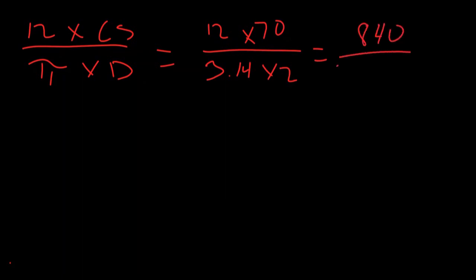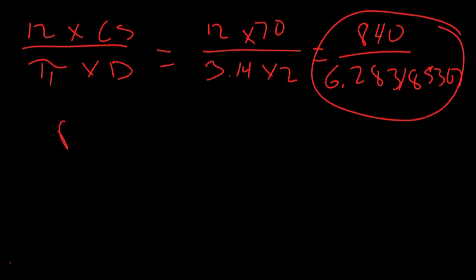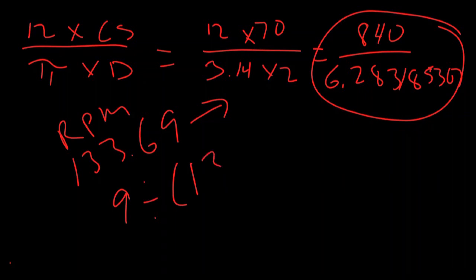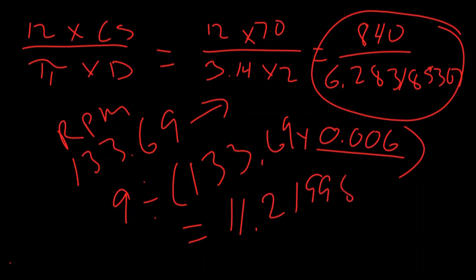That equals 840 over 6.283185307. When you divide those two together you're going to come up with an RPM of 133.69 and then a bunch more. So our part is nine inches long, so we're going to divide 9 by 133.69 times 0.006, which is our feed, which equals 11.21998654. Then you use the DMS button and you'll come up with 11 minutes 13 seconds.